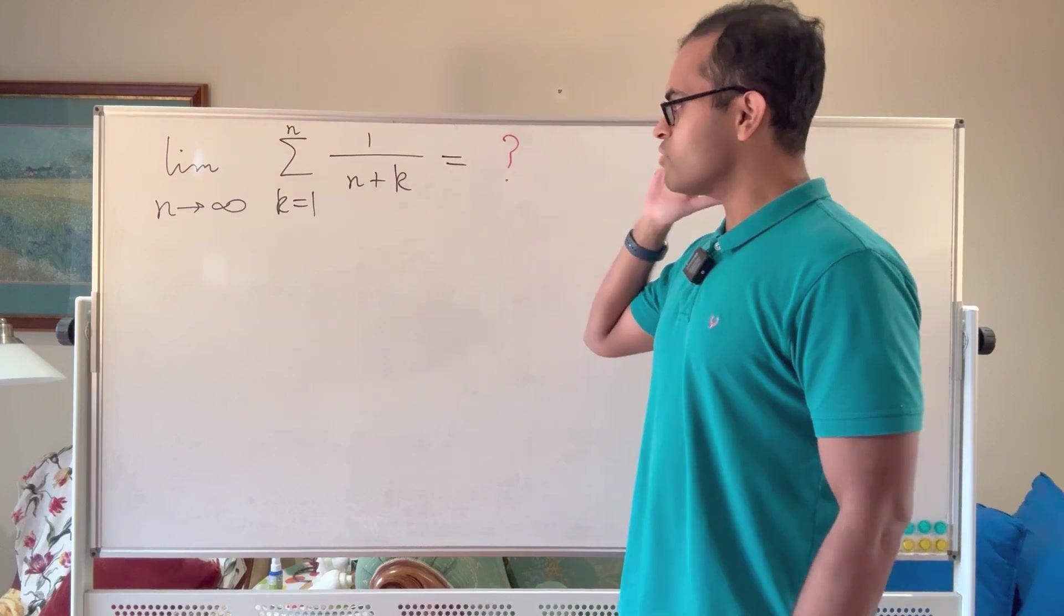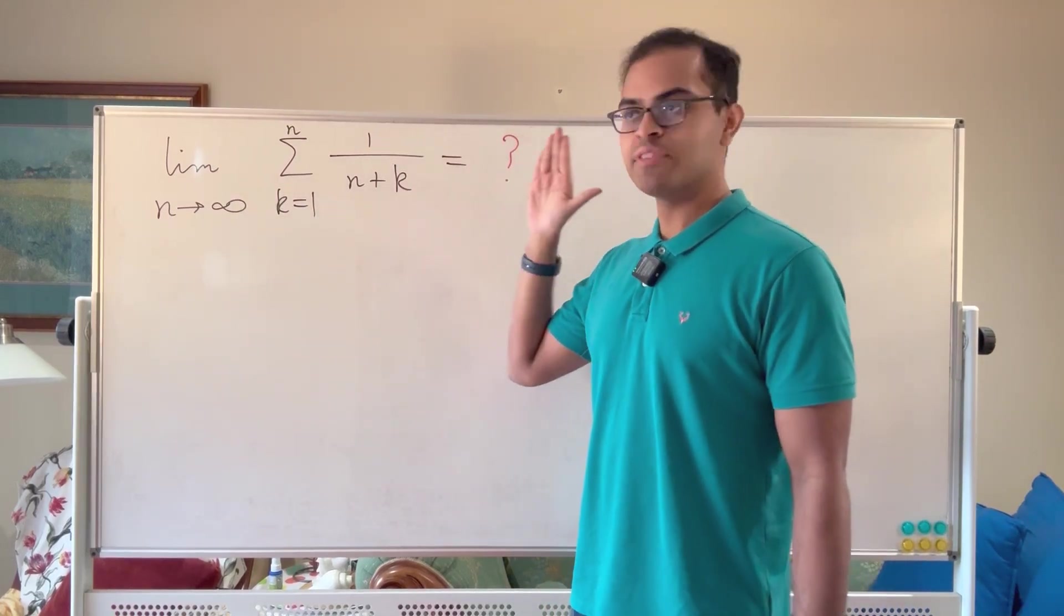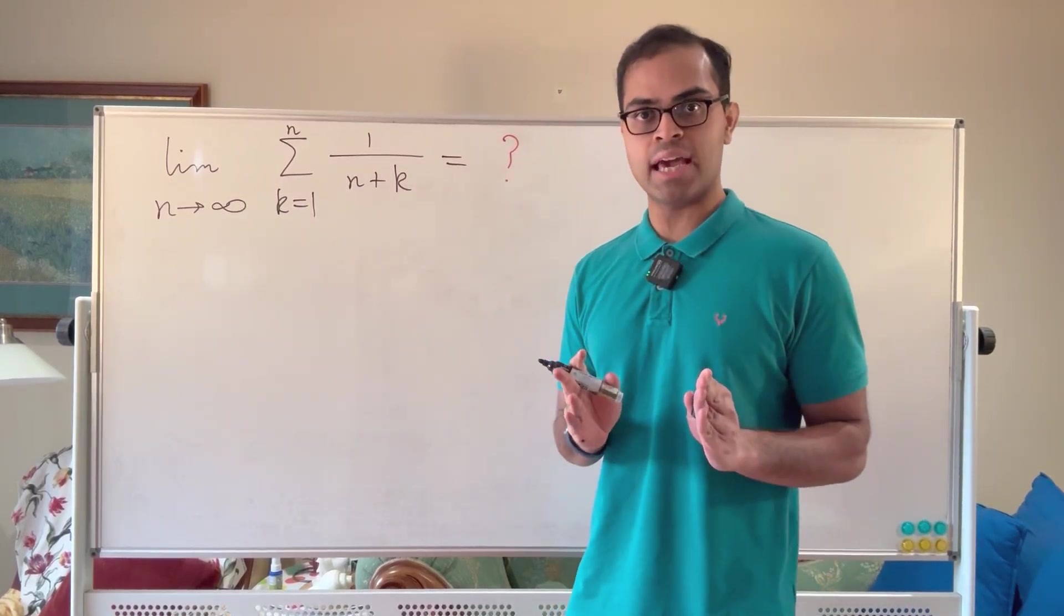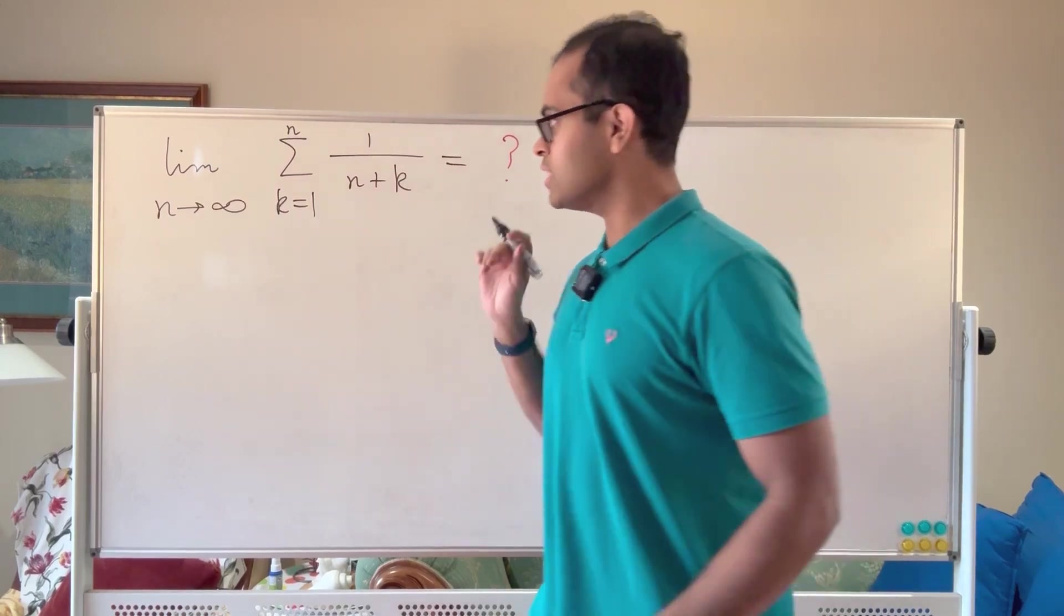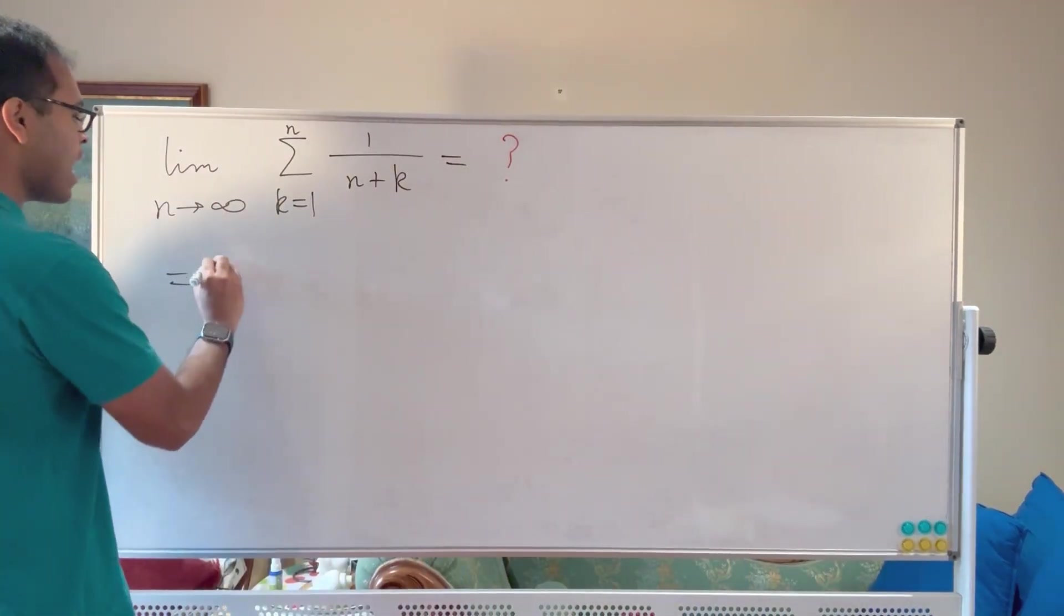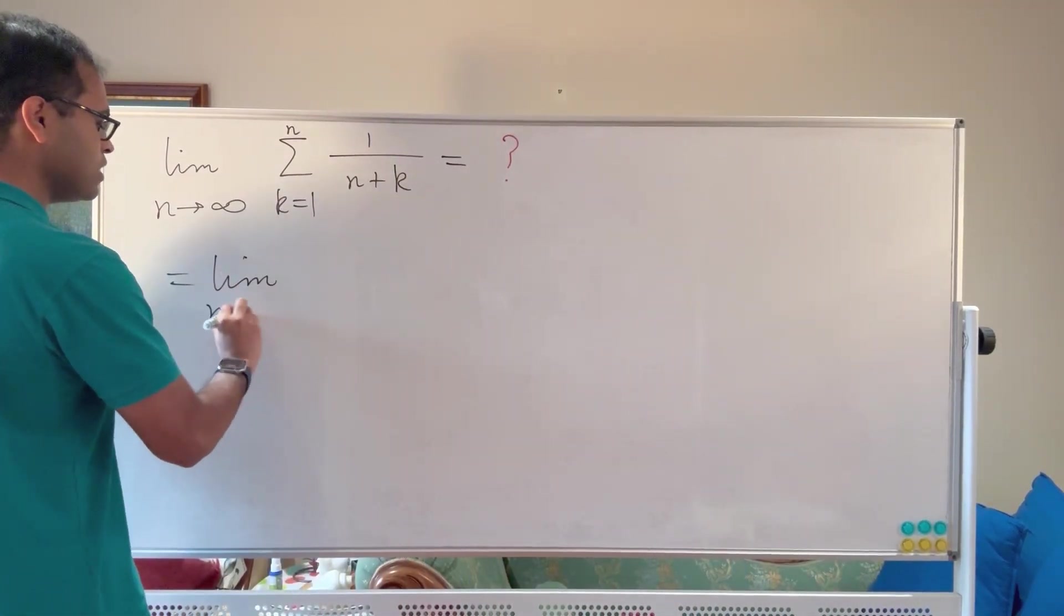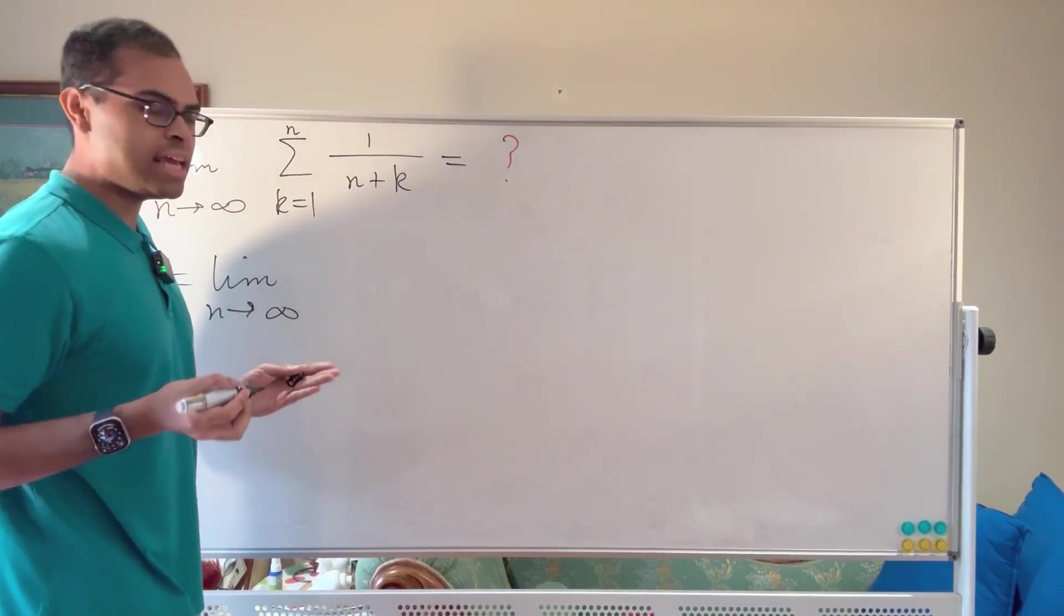Although it looks complicated, we've got the limit as n goes to infinity of sum k varies from 1 to n of 1 over n plus k. Now there are two variables here: a limiting variable which is n, and we're taking the limit as n goes to infinity, and then we have a summation variable which is k.